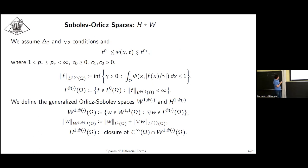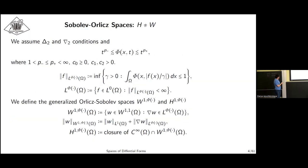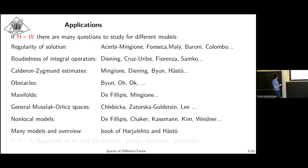One can also consider Sobolev-Orlicz spaces, which have energy corresponding to this Orlicz function capital Phi, and pose the same question whether the closure of smooth functions in this space coincides with the space itself. For the case when this phenomenon is absent and smooth functions are dense, H equals W, variational problems were studied in this general setting by quite a number of authors.